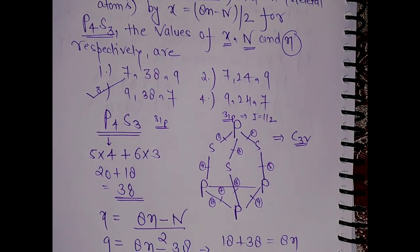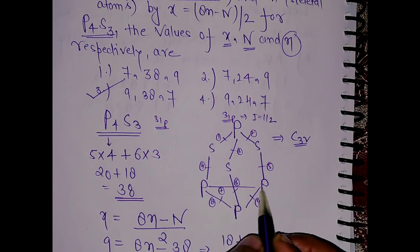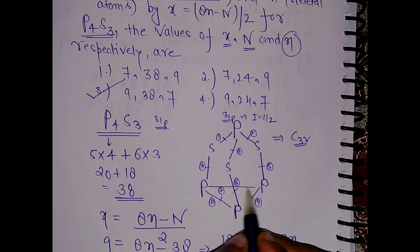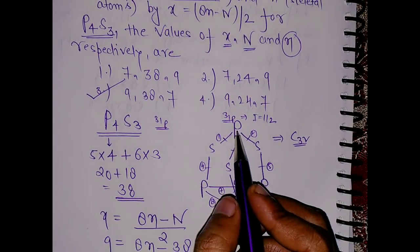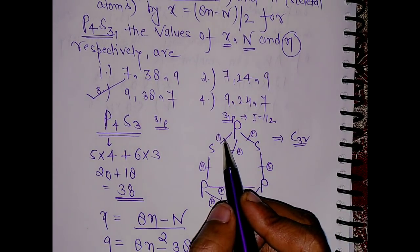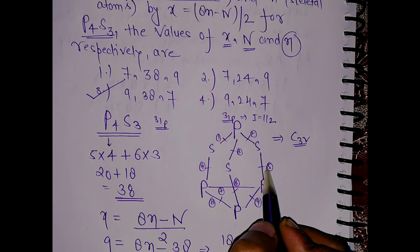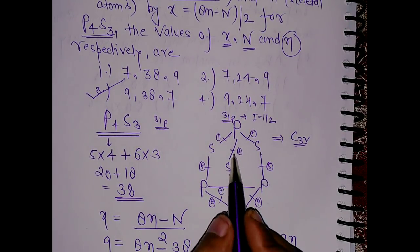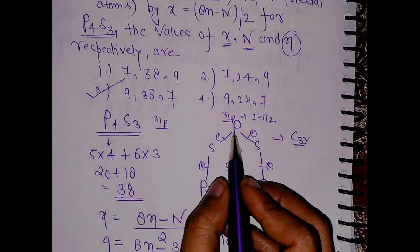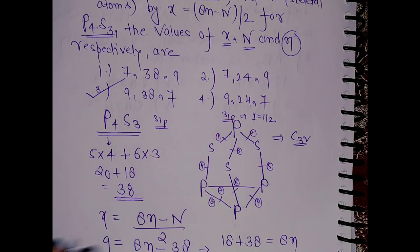Number of phosphorus-phosphorus bonds are how many? This is one, two, and three. At the same time we can calculate number of phosphorus and sulfur bonds, which is one, two, three, four, five, and six. So number of phosphorus-sulfur bonds are six. These can be little questions which can come in the examination.